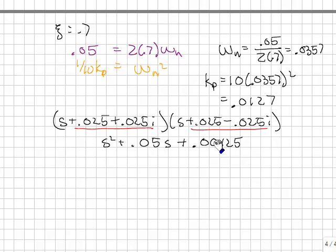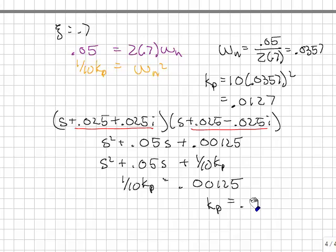And now I compare that to my original system, which was s squared plus 0.05s plus 1 tenth kp equal to 0. Match coefficients, and I'm left with 1 tenth kp is equal to 0.00125, or kp is equal to 0.0125. And I should emphasize that this method here, I write down the characteristic equation that I want directly, only works if you know a valid characteristic equation. And I know that that will be a valid characteristic equation.